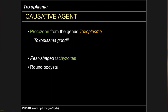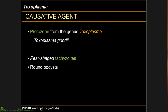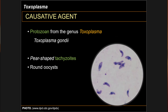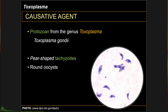The causative agent for toxoplasmosis is a protozoan from the genus Toxoplasma, more specifically Toxoplasma gondii. The organism is characterized by a pear-shaped tachyzoite with round oocysts, and hence they belong to the class Coccidia.